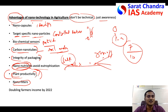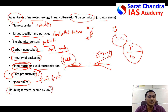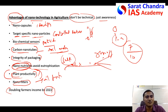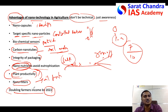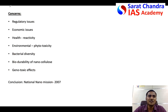Nano filters help in increasing soil fertility, which is very important for yield and productivity. At the end, you can say the doubling of farmers' income by 2022 — one of the government's key ambitions — can be fulfilled through nanotechnology. Remember, in any agriculture-related question, always link your answer to a government scheme, as government schemes must be mentioned in civil services examination answers wherever possible.